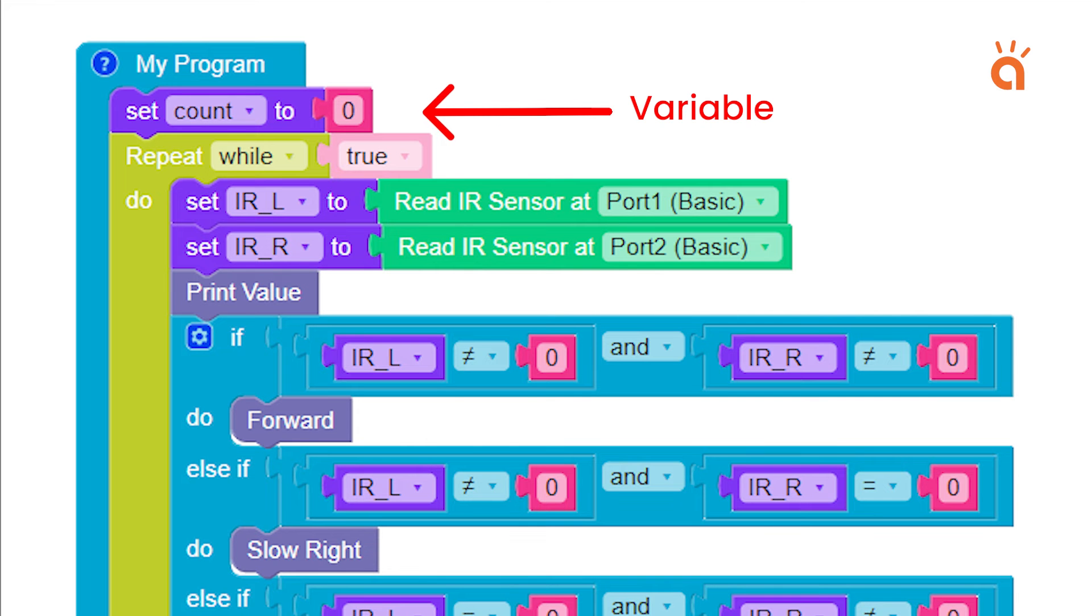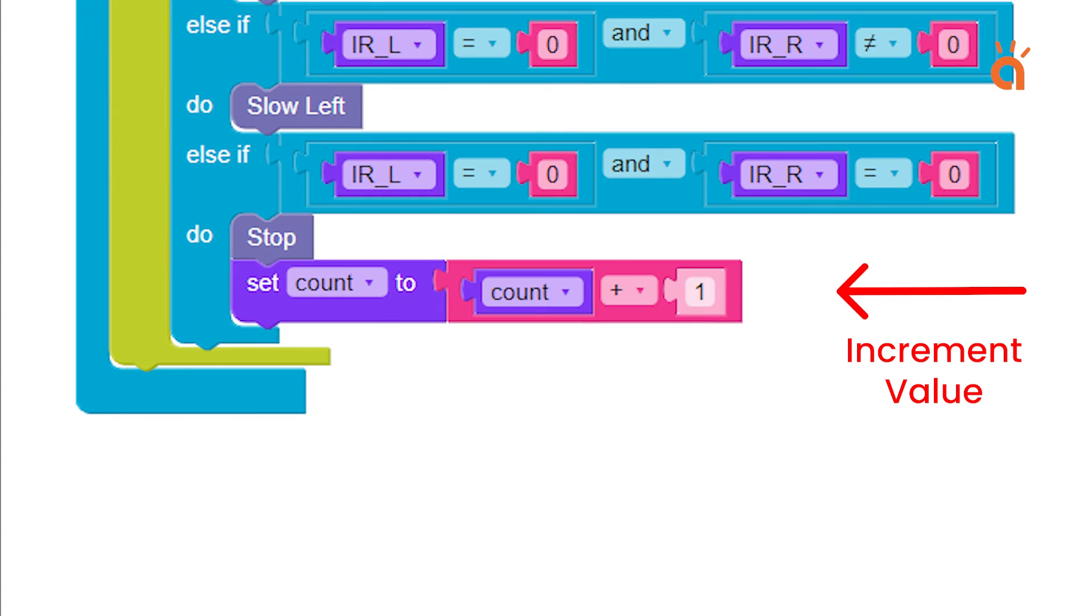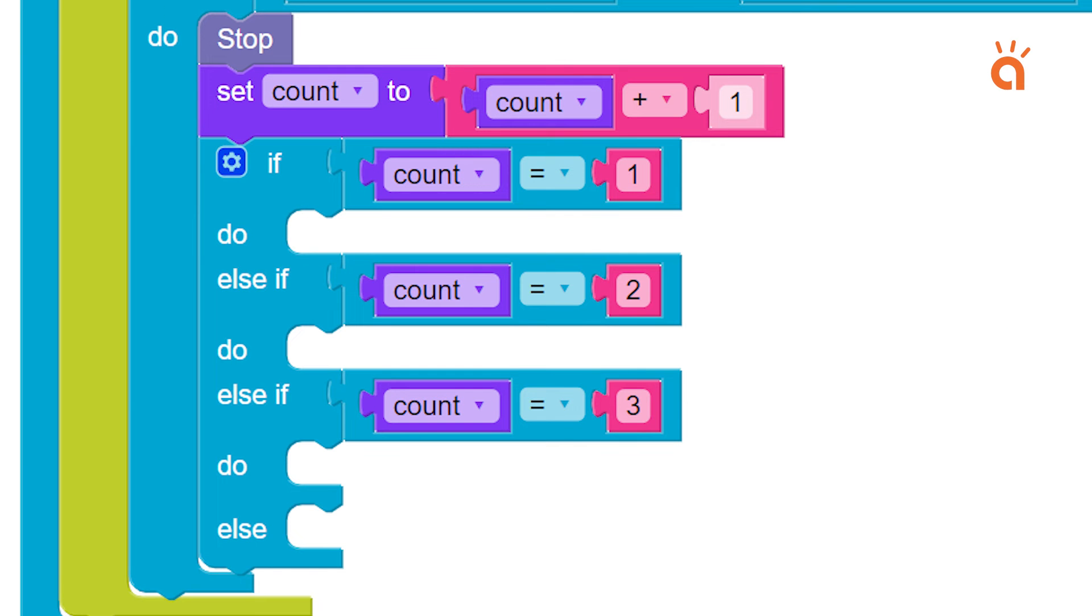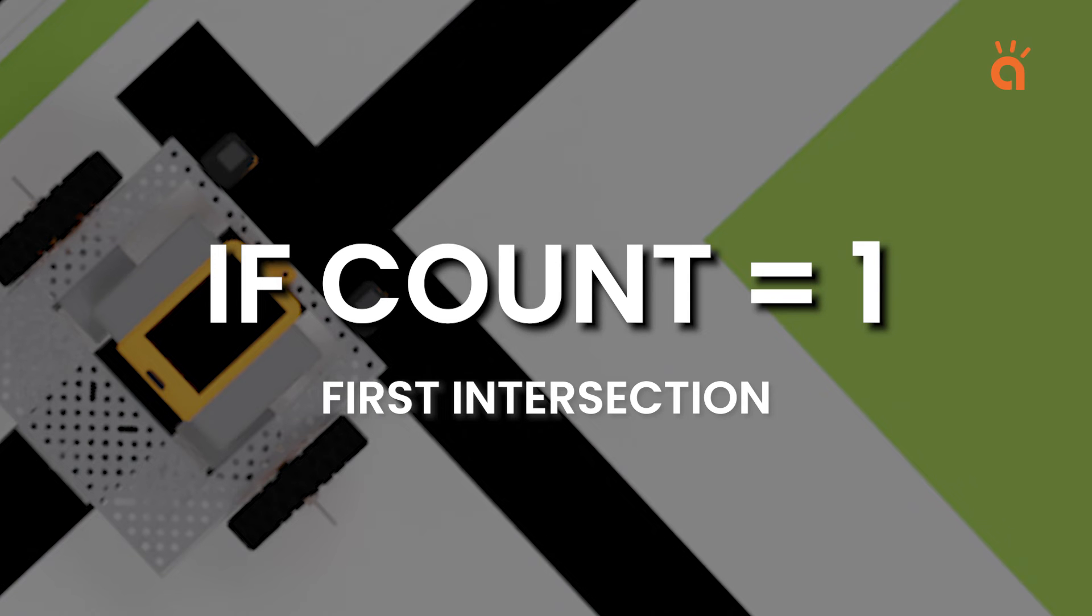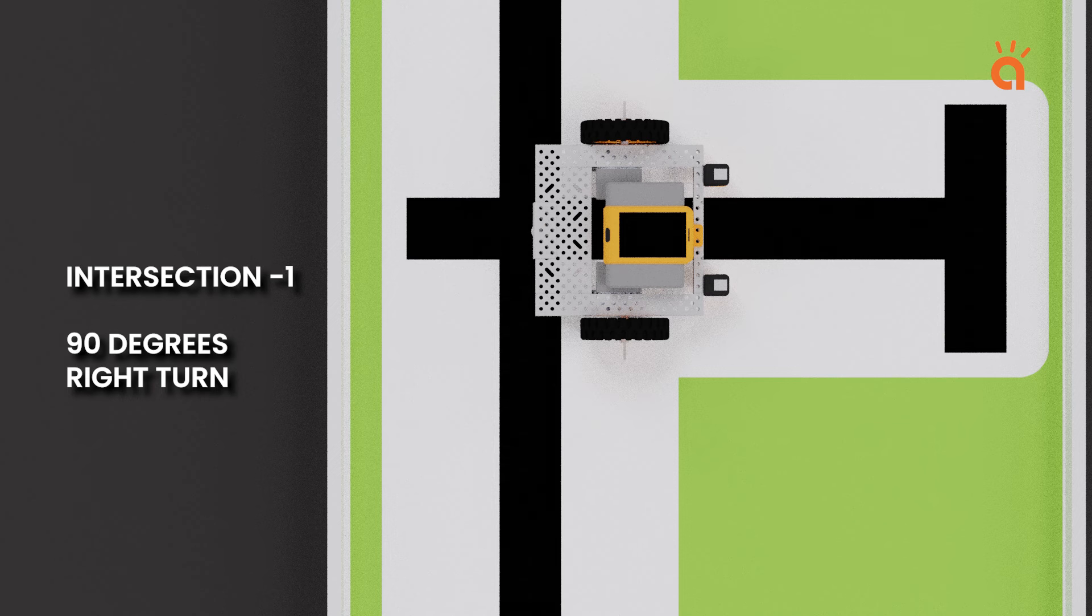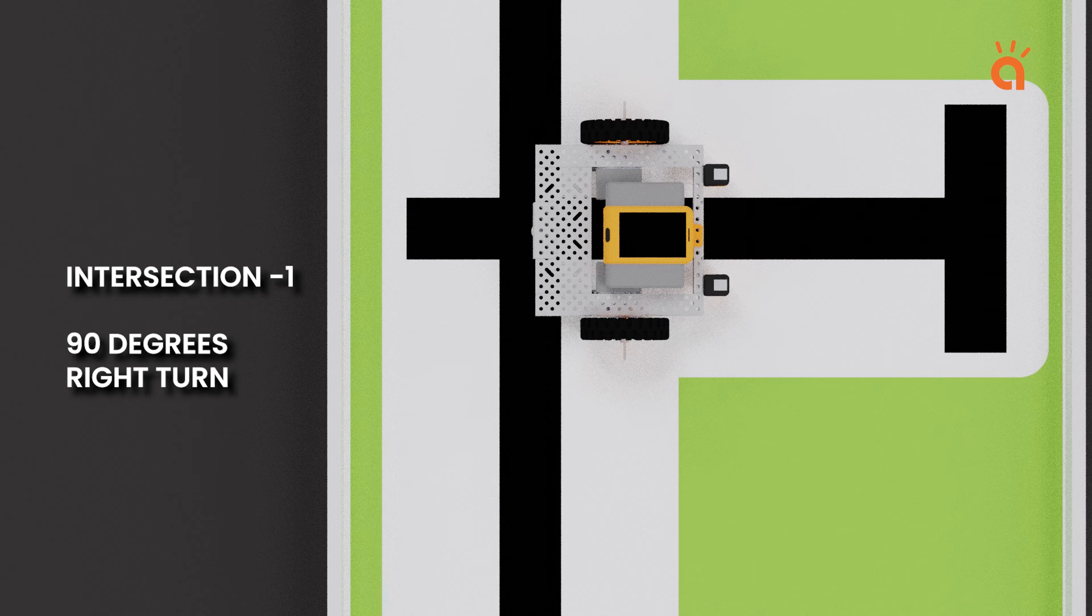For this, we will use a variable named count. Initially, we will set its value to 0 and we will increment this count by 1 each time both the sensors detect black color. That being done, now we will add different conditions based on the different values of count. If count is equal to 1, in this condition the robot needs to rotate 90 degrees in right direction.